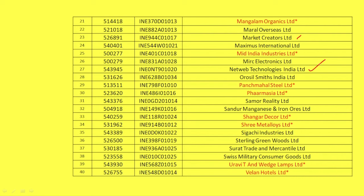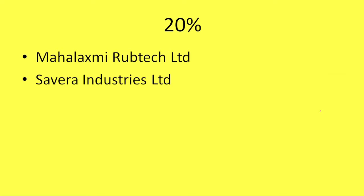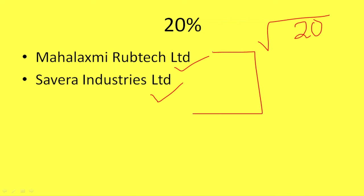Netweb Technology Limited is the result of the support. Qaskash Industry Limited has its full power. If the stock is not used, it will stay. The second stock will stay in the market, like Raptek Limited and Savera Industry. So this stock will stay in the market.